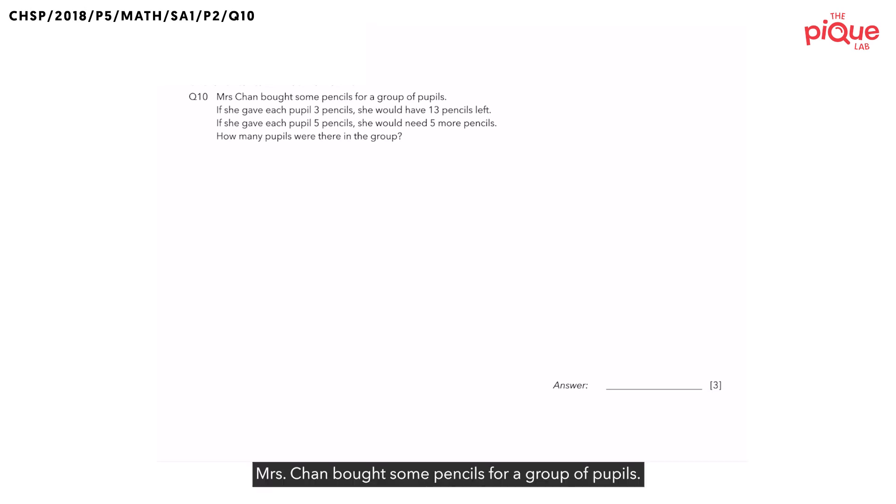Question 10. Mrs. Chan bought some pencils for a group of pupils. In this question, we have Mrs. Chan. Do we know the number of pencils she bought? We do not know since the question states some. Let's draw a model to help us remember that Mrs. Chan bought some pencils.